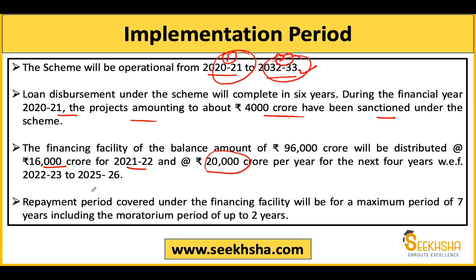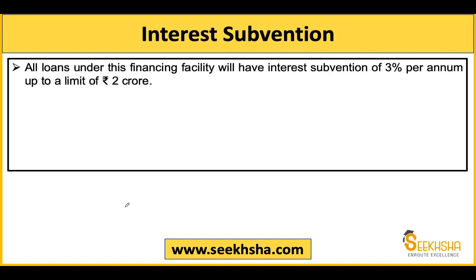The repayment period is 7 years, which includes a 2-year moratorium period during which the borrower does not need to pay interest. On loans under the Agriculture Infrastructure Fund, interest subvention is provided — for example, if the interest rate is 9%, the government gives a 3% per annum discount, so you effectively pay only 6%. However, this 3% interest subvention is only available for loans below 2 crore.